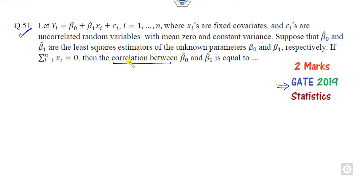In this case, you have to find the correlation between regression models. As I told you in the previous class, covariance of beta_i and beta_j is c_ij times sigma squared. What is c_ij?